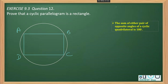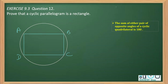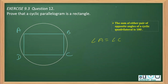The property used here is based on the fact that the pair of opposite angles of a cyclic quadrilateral is 180 degrees. Since ABCD is a parallelogram, we can write angle A is equal to angle C. Any pair of opposite angles — whether A and C, or B and D — are equal. The reason is: opposite angles of a parallelogram are equal.